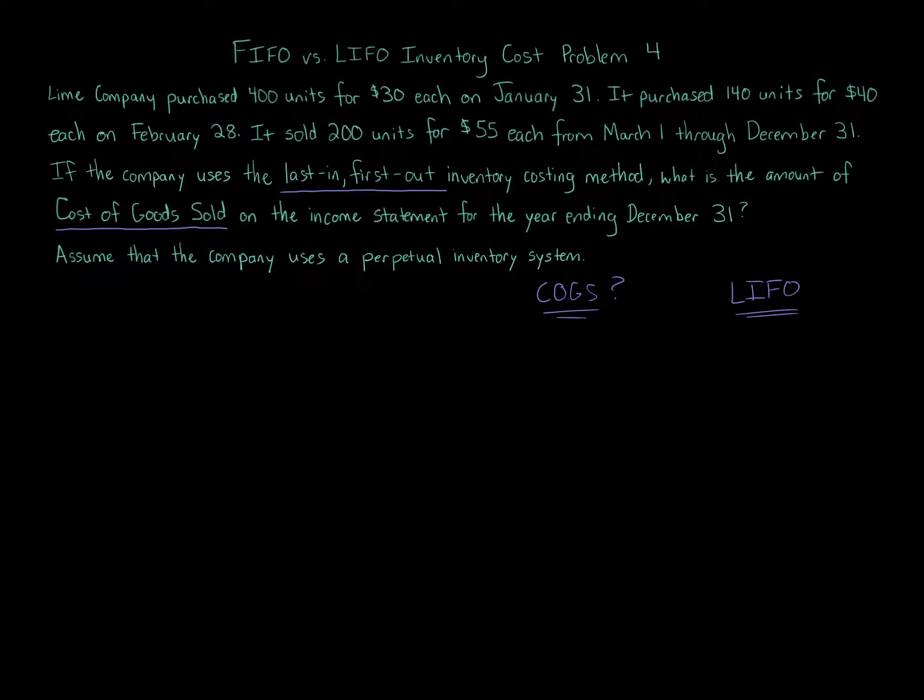Next, put in order the layers purchased by the company, the purchases. There's only two purchases of units, identical units during the year. Go in chronological order. January 31st, the company purchases 400 units at $30 each. And then on February 28th, we're told, which is the next date, we have 140 units at $40 each. So little observation, prices increase or rise over time based on the problem.